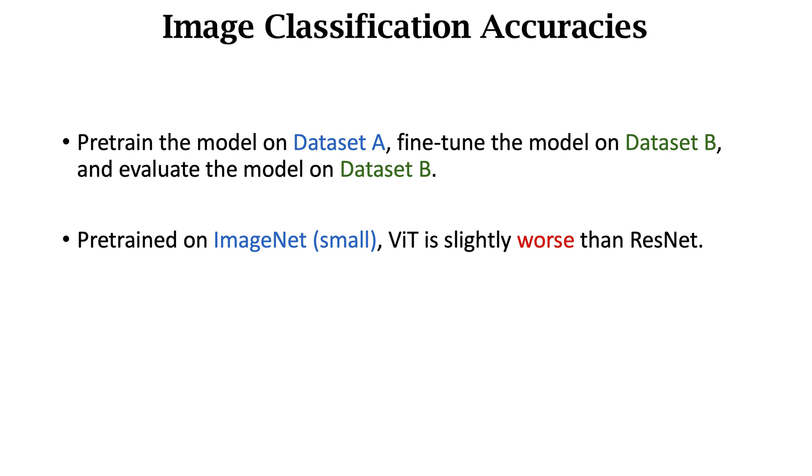Use the small ImageNet for pre-training. Then they use various target datasets, including the small ImageNet, CIFAR10, CIFAR100, and other small datasets. They use the target datasets for fine-tuning and evaluation. On all the target datasets, Transformer is a little worse than ResNet. This means without a big dataset for pre-training, Transformer does not perform well.